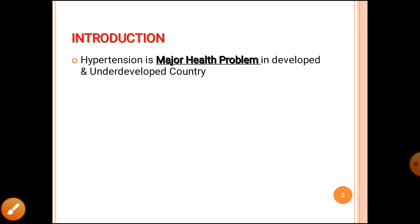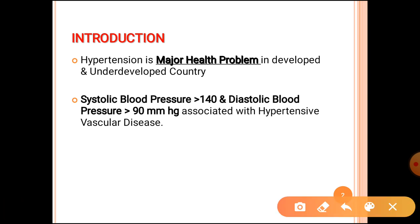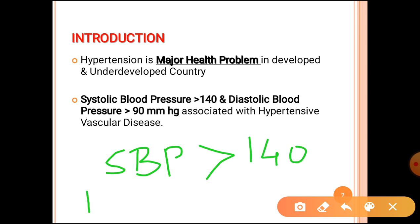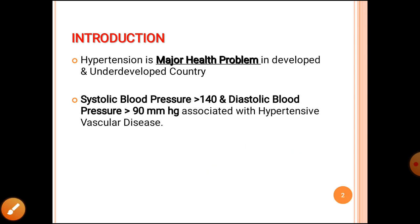First of all, when will you call a case hypertension? The patient is hypertensive if his or her systemic blood pressure is more than 140 and diastolic blood pressure is greater than 90 mm of mercury. If this much elevation is present, then the case is labeled as hypertension and it can affect your blood vessel.